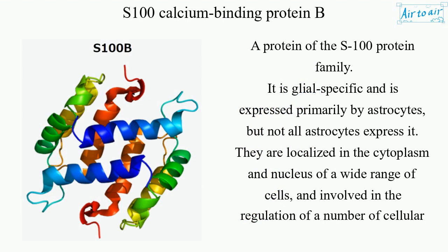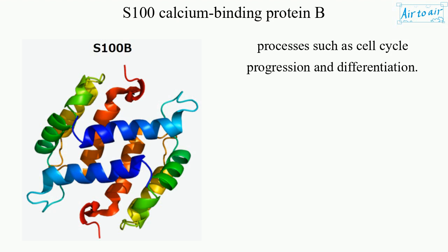It is glial specific and is expressed primarily by astrocytes, but not all astrocytes express it. They are localized in the cytoplasm and nucleus of a wide range of cells, and involved in the regulation of a number of cellular processes such as cell cycle progression and differentiation.